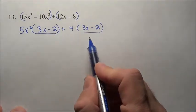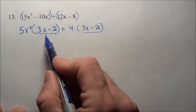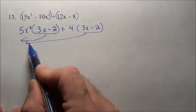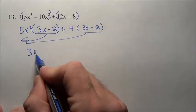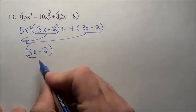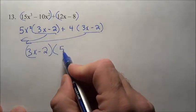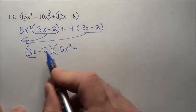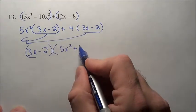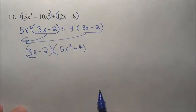Notice this piece and this piece match, so they both can be factored out front. The 3X minus 2 is factored out front, and you're left behind with 3X minus 2 times 5X squared, and 3X minus 2 times 4. You're left behind with these two pieces right here.